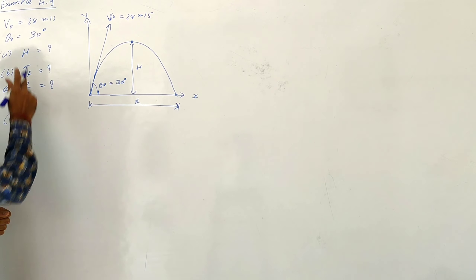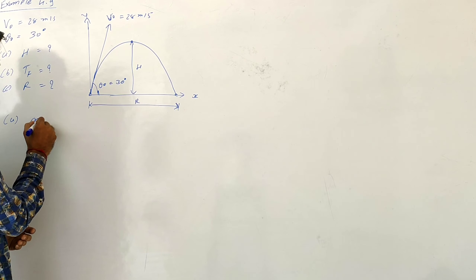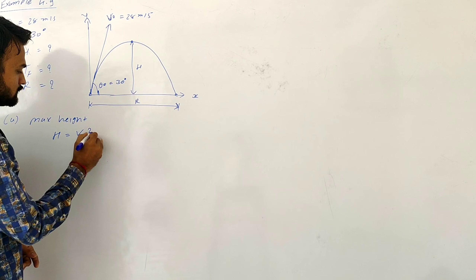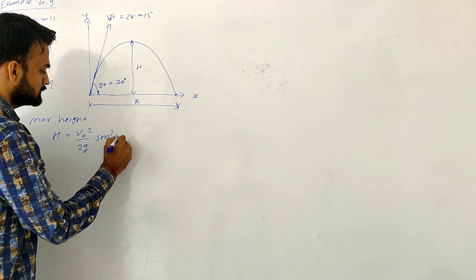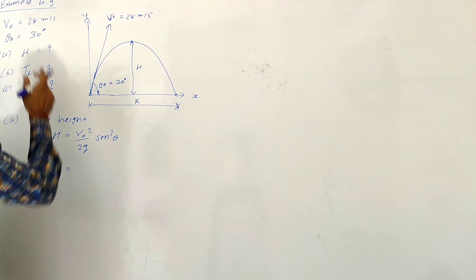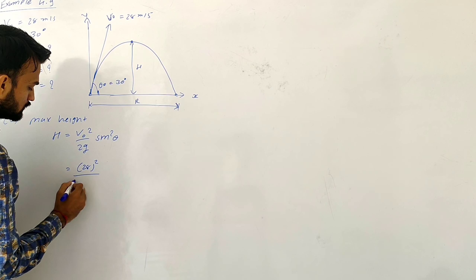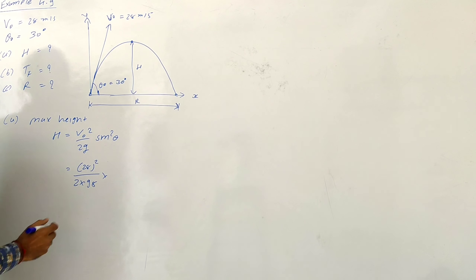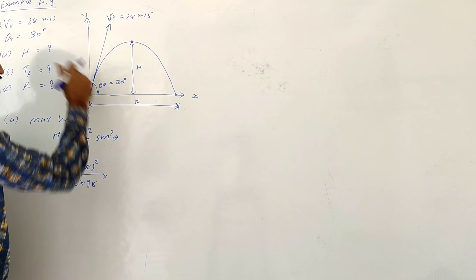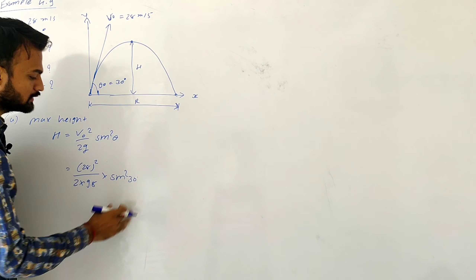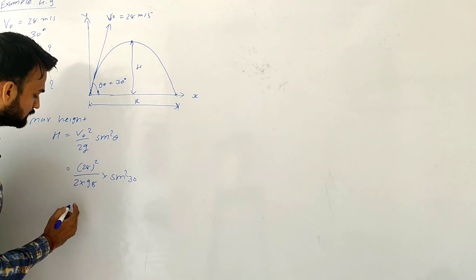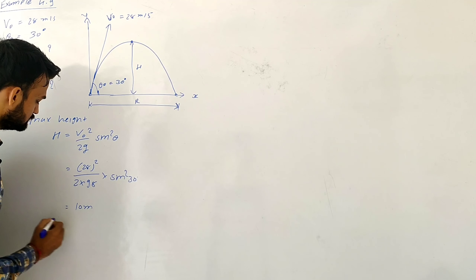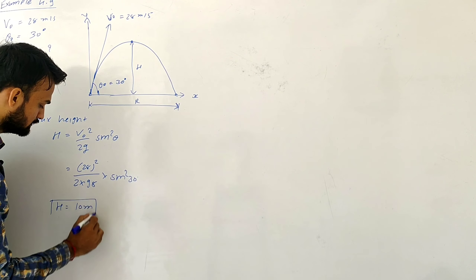Part A: find out the maximum height. The formula is H = V₀² sin²θ / 2g. So V₀ squared is 28 squared, 2g is 2 × 9.8, and sin²(30°) = (1/2)² = 1/4. After simplifying this term, you will get the answer: H is equal to 10 meters.